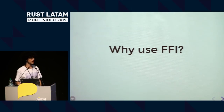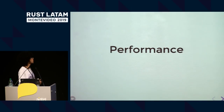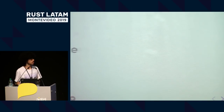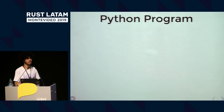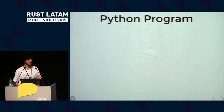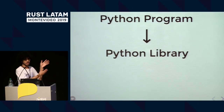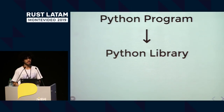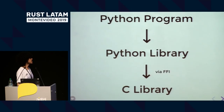But why use this? You can use it for various reasons. One of them is performance. For example, people who do data science usually use some common Python libraries to do things. Some of those libraries are actually written in C — they do Python wrappers around the C code and get some C performance out of that. That's pretty cool.